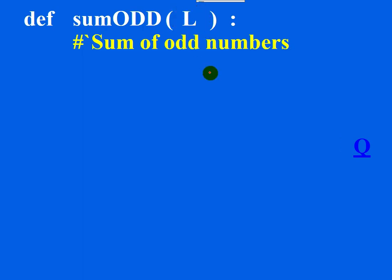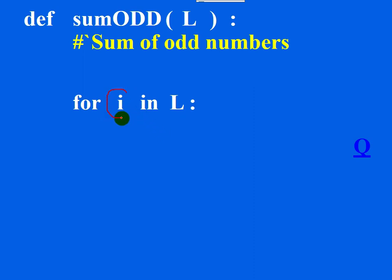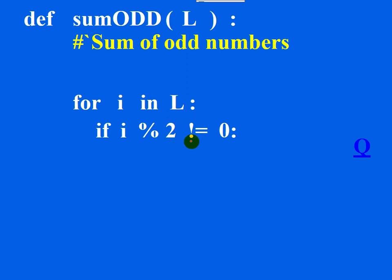To get each element of the list, use: for i in l. i contains each element. Check whether i is an odd number using: if i % 2 != 0. In Python, not-equal-to is written as exclamation mark followed by equal sign. If i modulo 2 is not equal to zero, then i is an odd number, and here you write the code to find the sum.